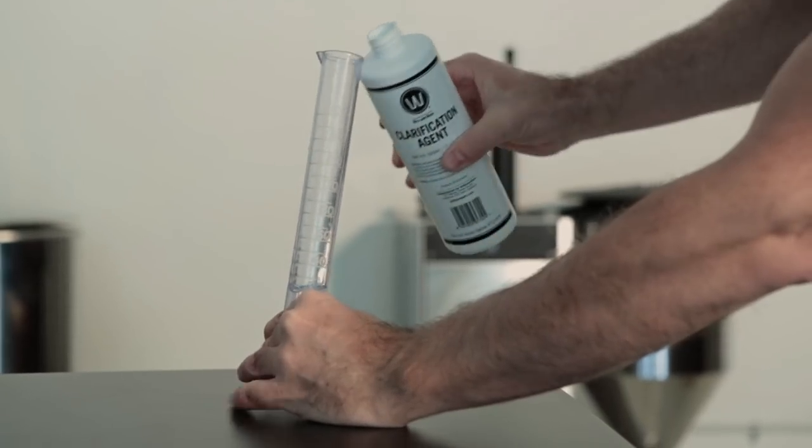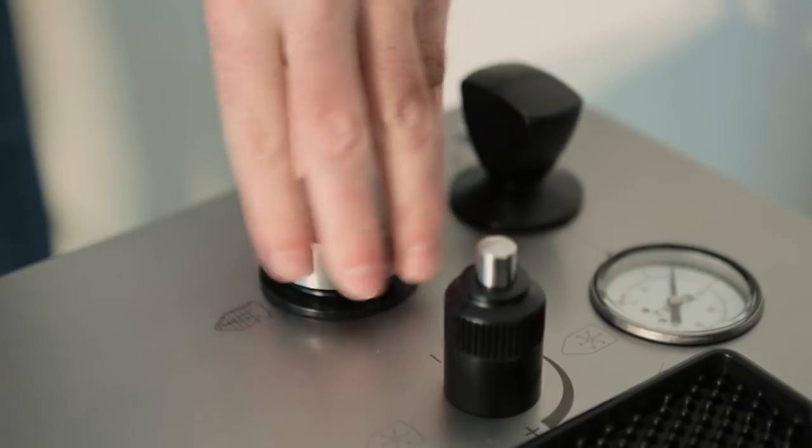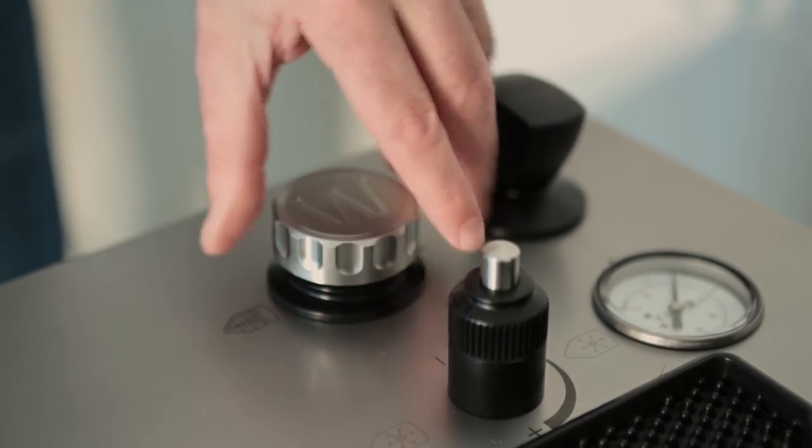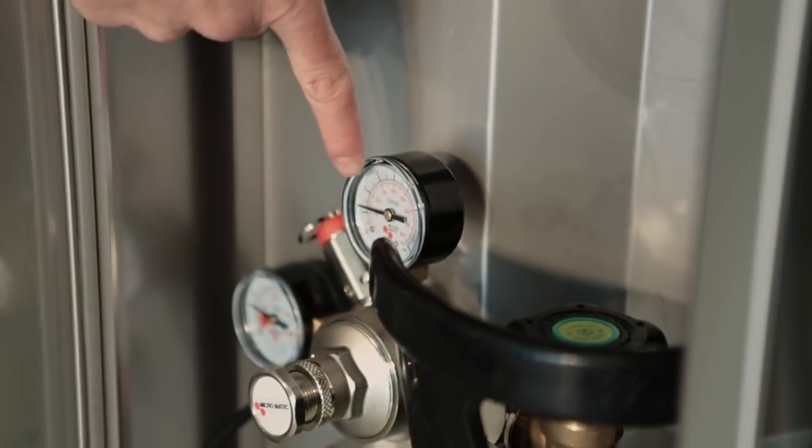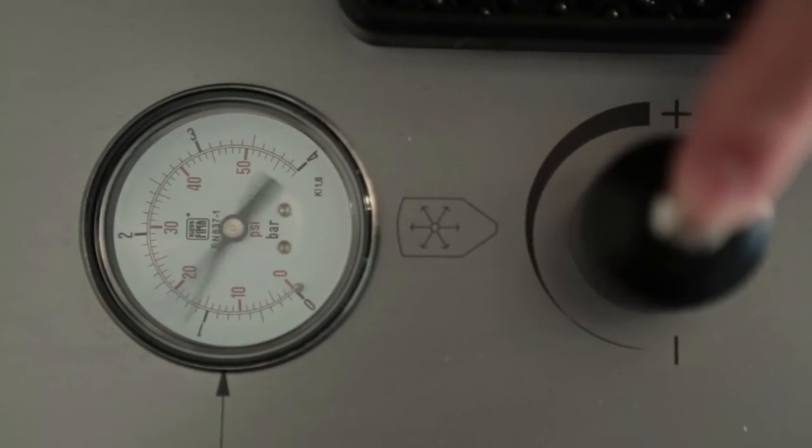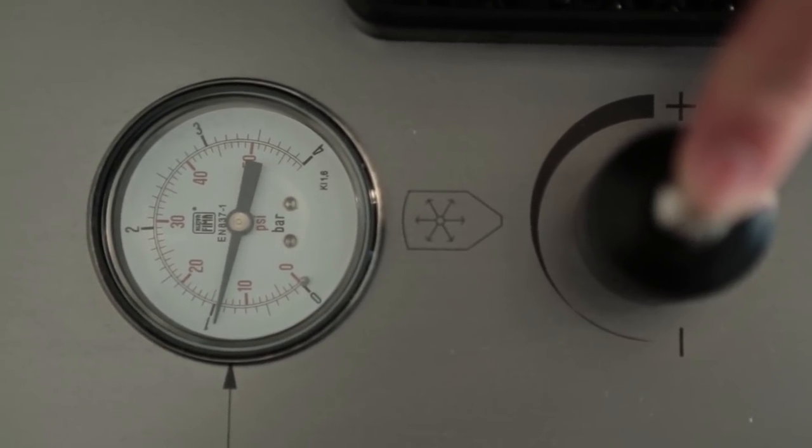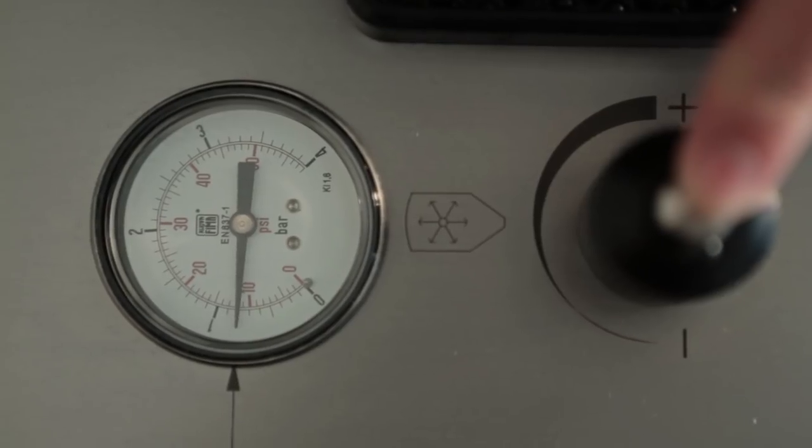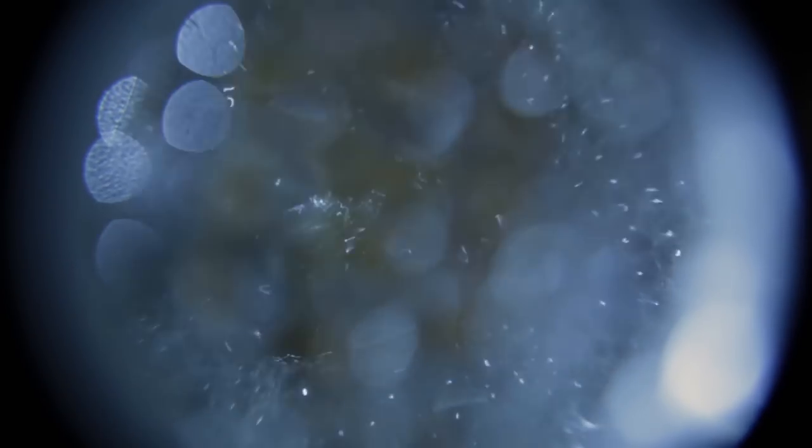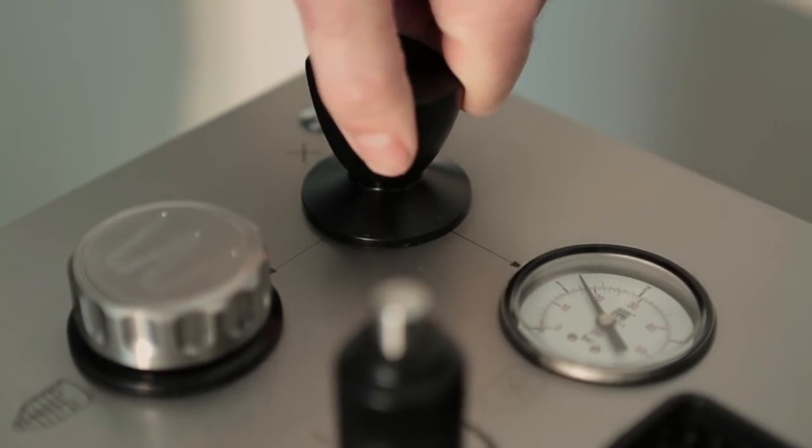Next we add some clarification agent to the 100ml cylinder and add that to the clarification pot on the brewery. Then ensure the CO2 cylinder in the tower is set at a low pressure of about 1.25 bar or 18 PSI, and then release pressure out of the brewery so that the vessel is half a bar or 7 PSI lower than the CO2 cylinder. Then turn the three-way valve on the control panel to the pot and force the clarification agent into the beer for 10 seconds. Then close the three-way valve.